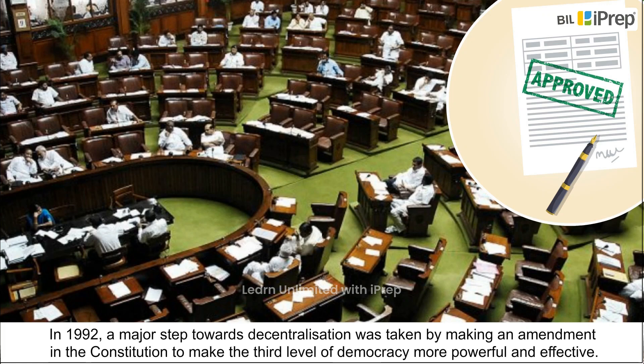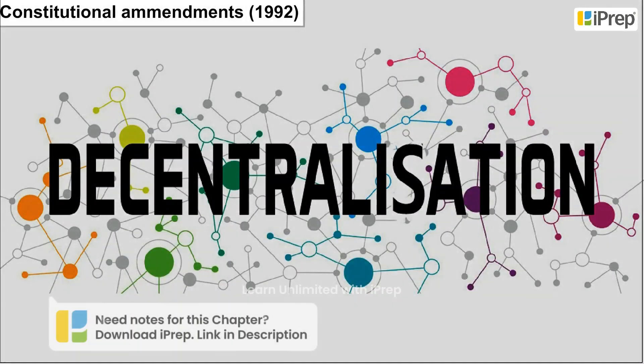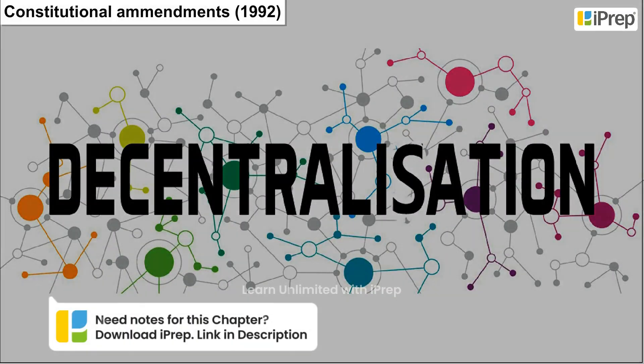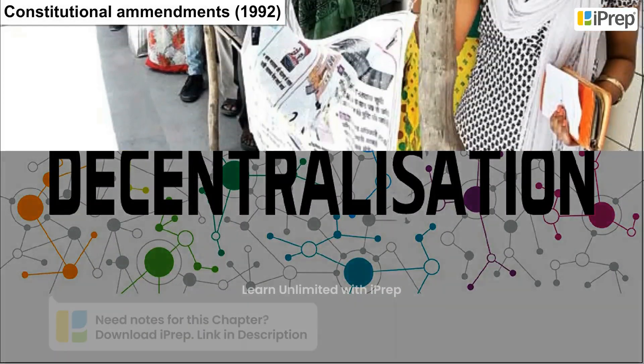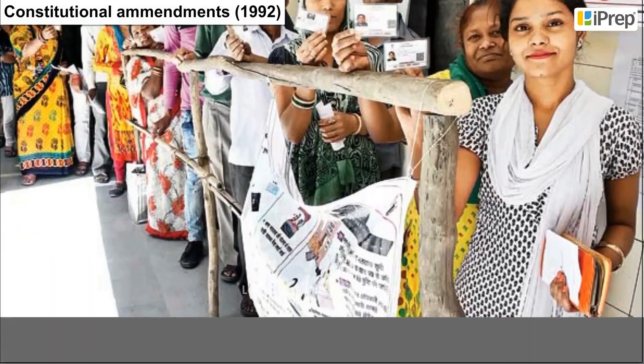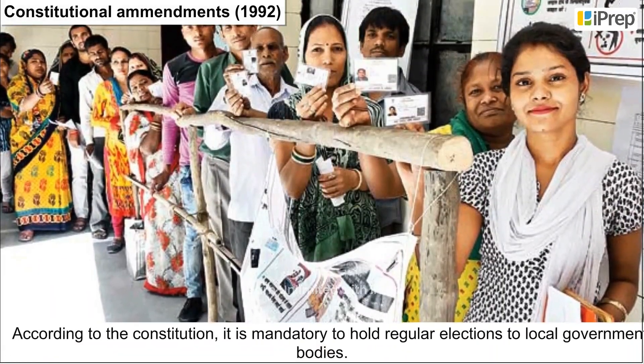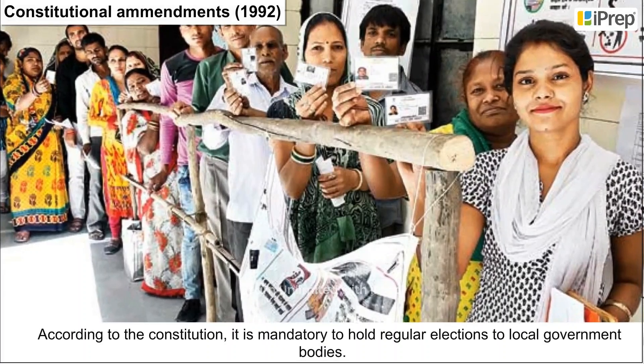In 1992, a major step towards decentralization was taken by making an amendment in the constitution to make the third level of democracy more powerful and effective. These are known as the Constitutional Amendments of 1992.